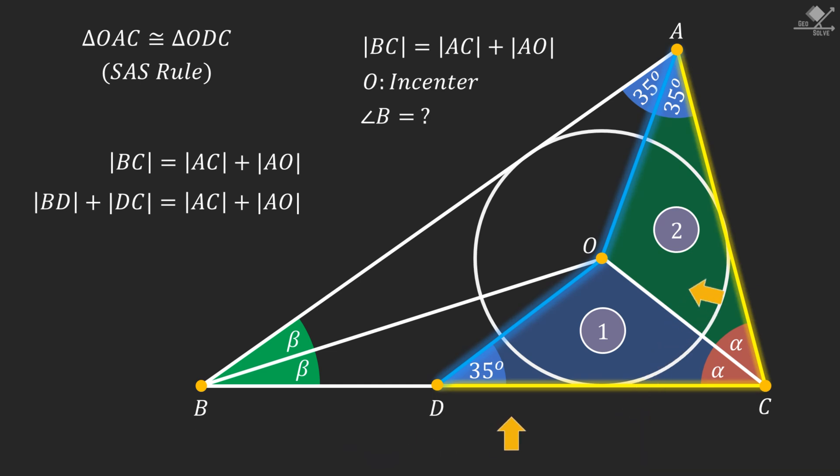We showed earlier that DC is congruent with AC. So let's write AC instead of DC in the equation. Now we have AC on both sides and they can be canceled out. So we know BD is equal to AO.